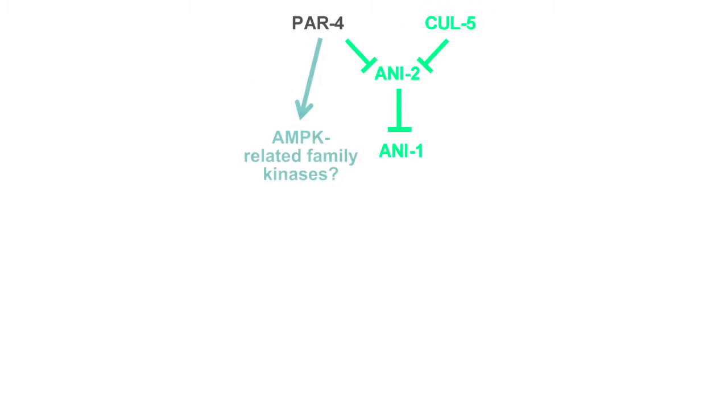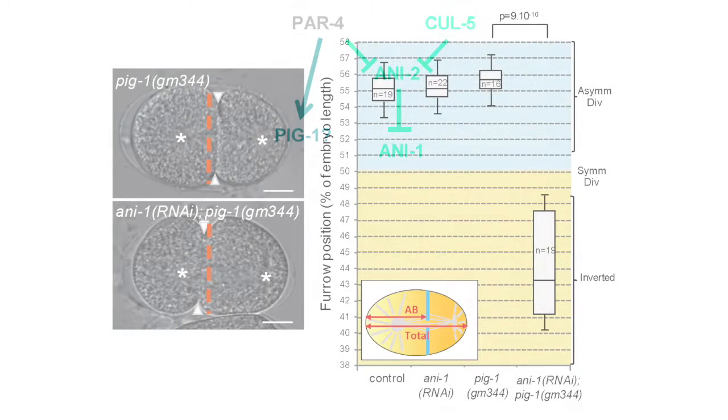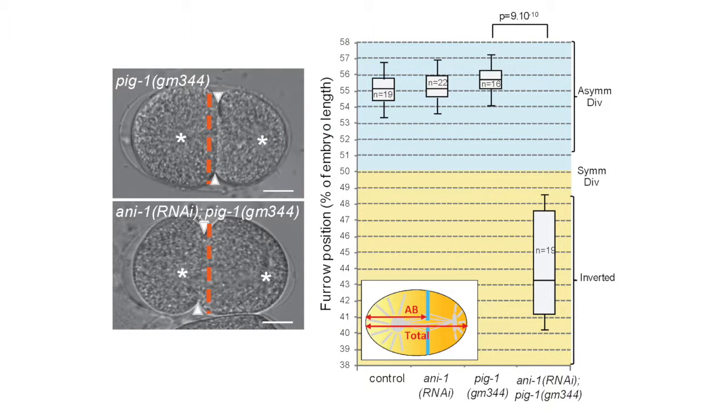PAR4 is known to regulate kinases from the AMPK related family and two of these kinases are known to be involved in polarity or asymmetric cell division. One is PAR1 which is very well known for its role in the first asymmetric division but surprisingly we found that PAR4 was not acting through PAR1 for this particular phenotype. So then we went to look for another kinase which is PIG1, the homologue of vertebrate MELC, and we found that PIG1 is involved in the anilin 1 independent pathway.